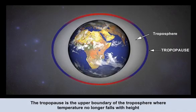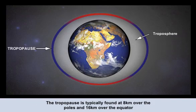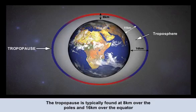At the tropopause, temperature is constant with altitude. The thickness of the troposphere, and therefore the height of the tropopause, is not constant across the Earth. Over the poles, the height of the tropopause is about 8 kilometres, whereas over the equator it's about 16 kilometres. The average height is 11 kilometres, found at about 45 degrees latitude.